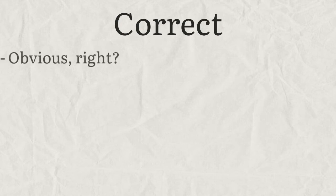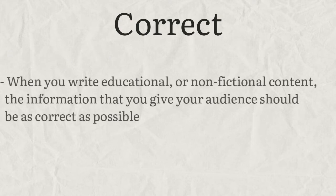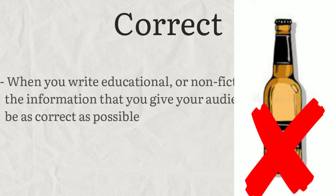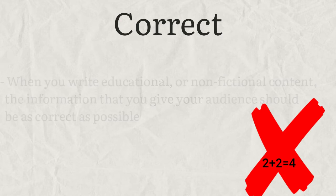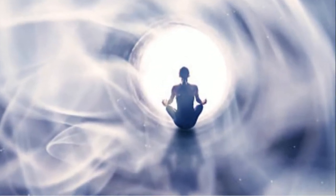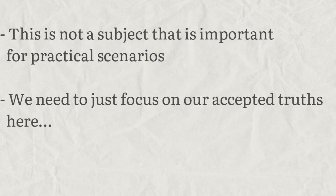So at last, we arrive at our final C — that writing should be correct. Hopefully this is something that I don't need to go into too much detail about. When you write something educational, non-fictional, or for marketing purposes, the information that you want to give your audience should be as correct as possible. Don't advertise that your new craft ale is £4 a bottle at your local supermarket when actually it's £5. Don't tell people that 2 plus 2 equals 5 when actually it's 4. For the purposes of this video, we are just dealing with the accepted truths of our reality.